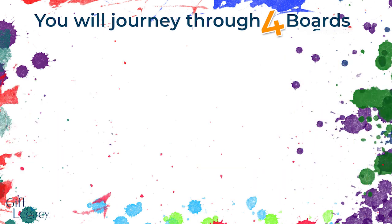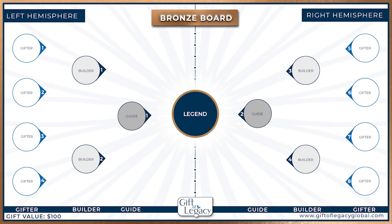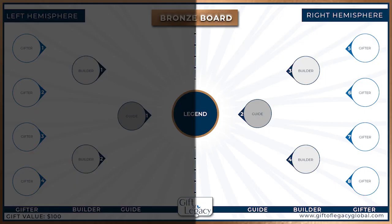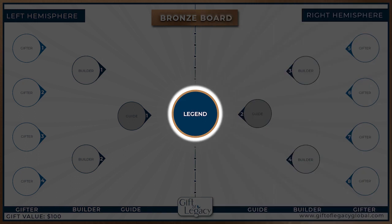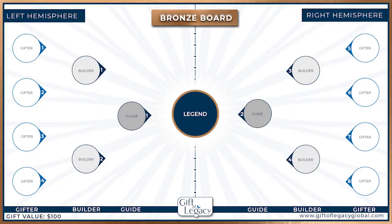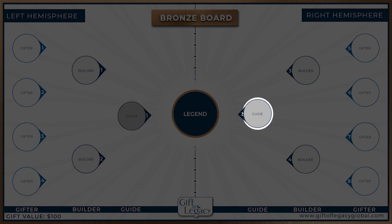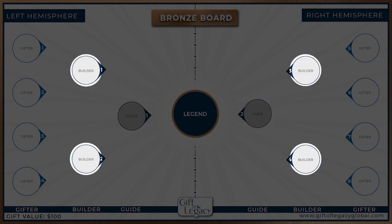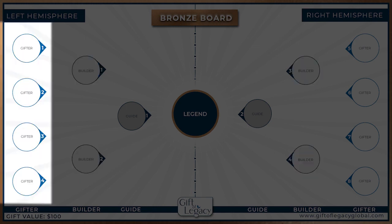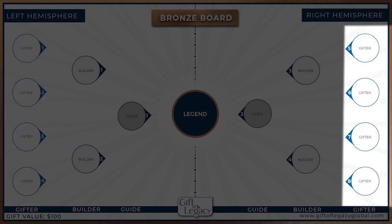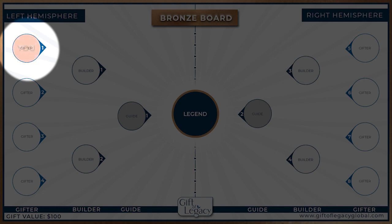Let's look at the Bronze board. As you can see, the board is divided into two hemispheres — the left hemisphere and the right. In the center you will find the Legend of the board. Next to the Legend on the left you will find the first Guide and on the right the second Guide. Then you will find two Builders in the left hemisphere and two Builders to the right. And finally on the far left the four Gifters and the far right the other four Gifters.